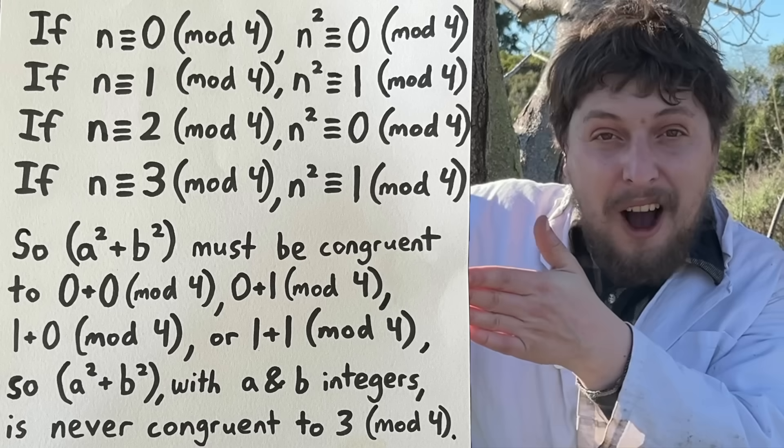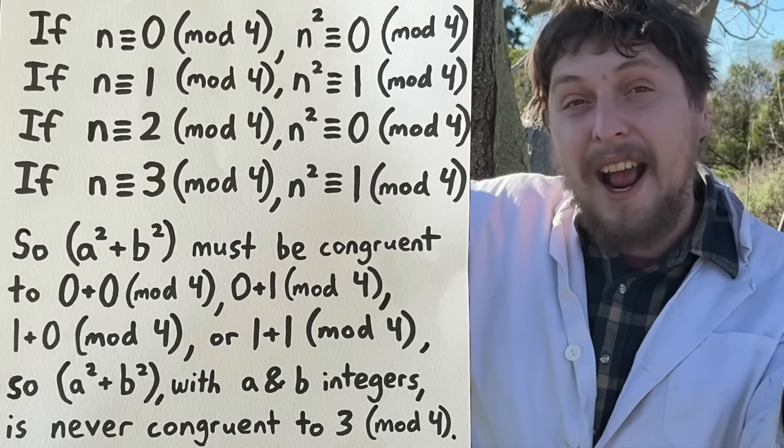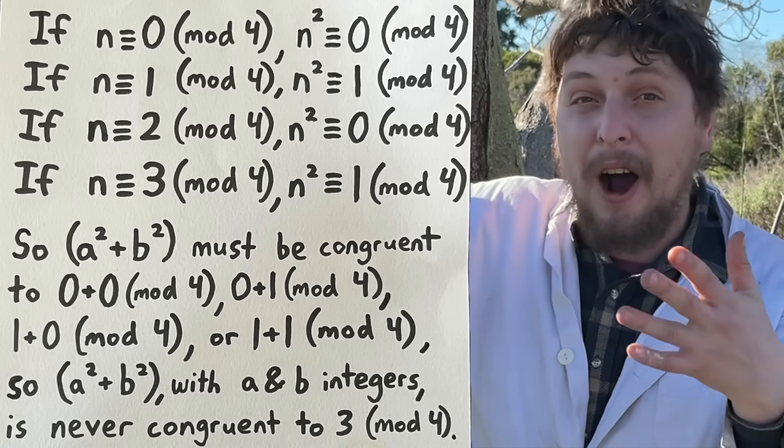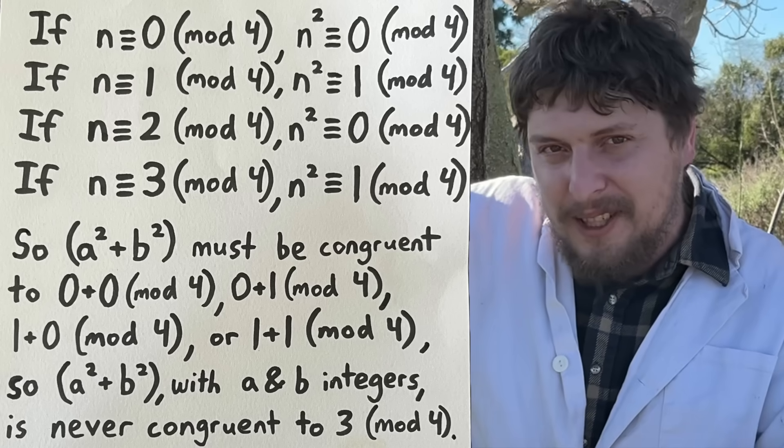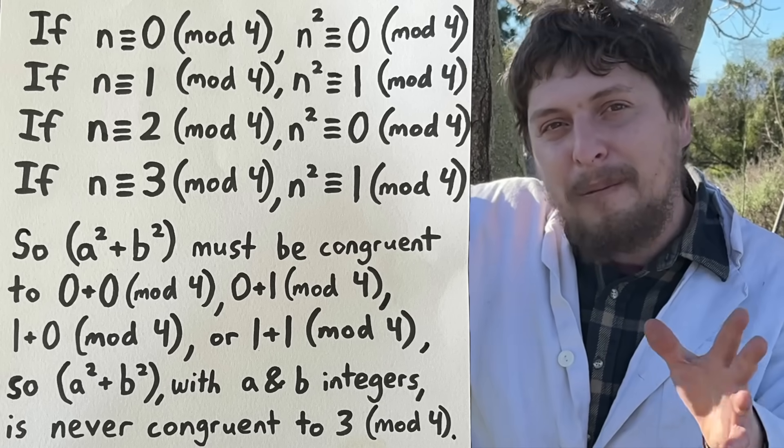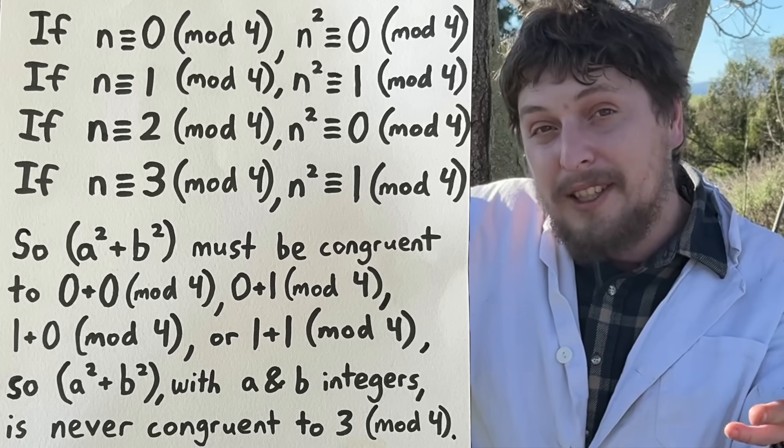or a one and a one, because those were our possibilities for squares, meaning that the sum of two squares must be zero, one,